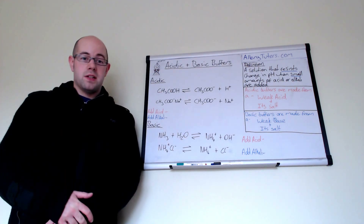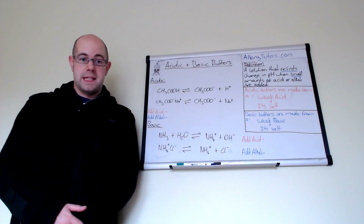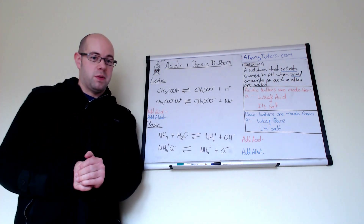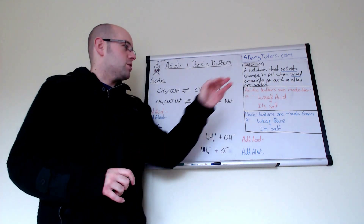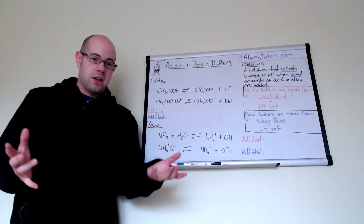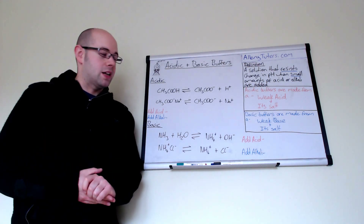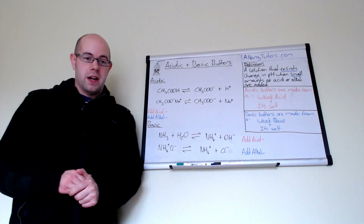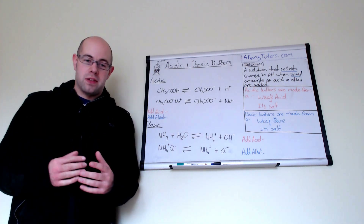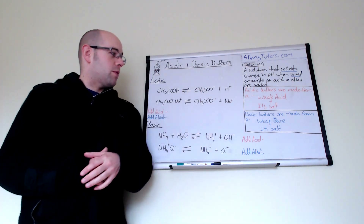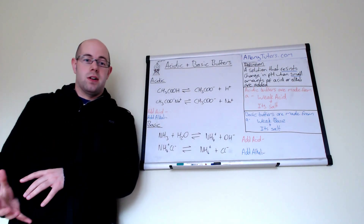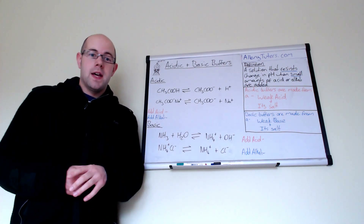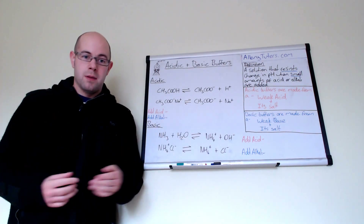There are two ways in which you can make a buffer. The first one is an acidic buffer, which keeps a pH within the acidic range. To make an acidic buffer you need a weak acid — so ethanoic acid, methanoic acid, anything like that — a carboxylic acid and its salt. Normally it's a sodium version of the acid, so sodium ethanoate for example. A basic buffer is made from a weak base and its salt, commonly ammonia as the weak base, and the salt would be something like ammonium chloride.